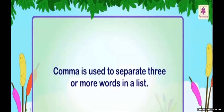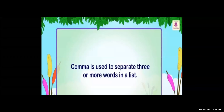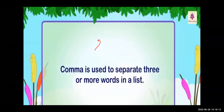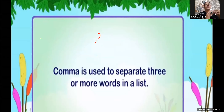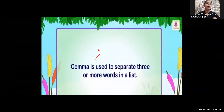The second punctuation mark is comma. Comma is used to separate three or more words in a list. We put a comma after each item when mentioning two or three things or words together. For example: I have a book, pencil, pen, eraser — each and every word I am going to add gets a comma. So comma is used to separate three or more words in a list.